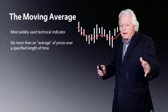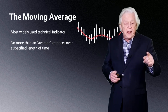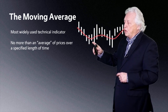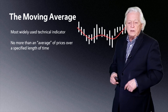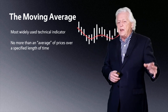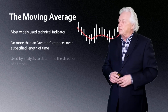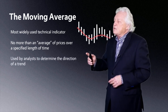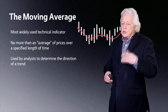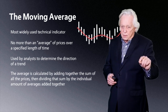It's no more than an average of prices over a specified length of time, and it can be an average of the highs, the lows, or the settlement prices. There are many different ways to do it, and there are two different types of averages: arithmetic and exponential. I prefer the simple arithmetic. It is used by analysts to try to determine direction, support, and resistance in a market.